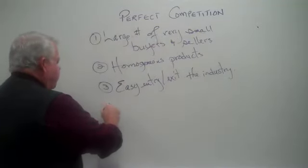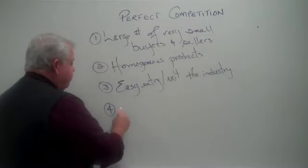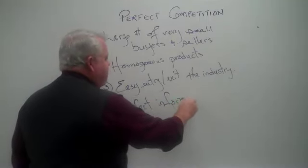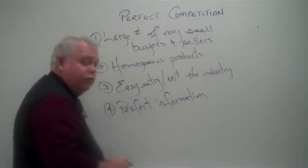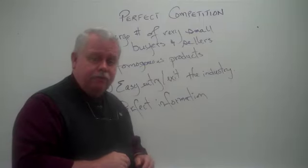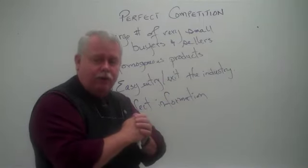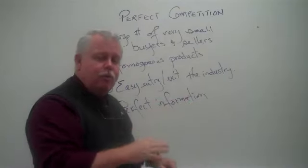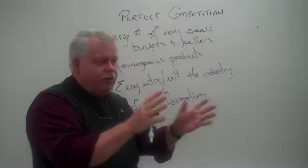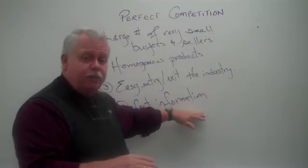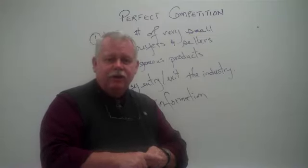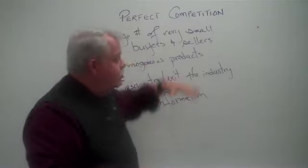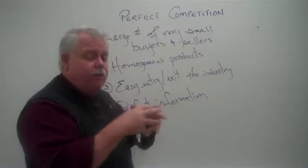The fourth assumption, which is absolutely key to this model, is that there is perfect information — perfect information on the part of both buyers and sellers. The buyers know the price charged by every seller. They know how to judge the quality of the product and the technical aspects. They are very completely knowledgeable, so they can judge when one product is poor quality and avoid it, and they can tell where the best price is. Sellers also have complete information and are aware of any changes in price that any other firms institute. These assumptions are a little unrealistic, but they build a very powerful model.